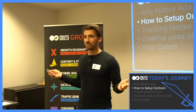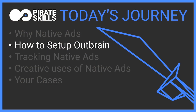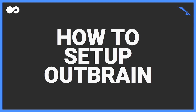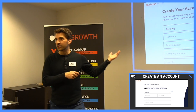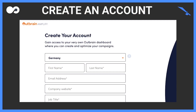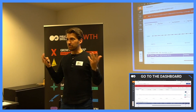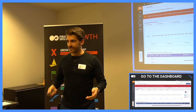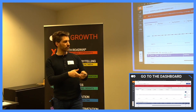We need to track the performance of our ads, but first we have to set it up. So how do you set up Outbrain? You go to outbrain.com, create your account with just minimal fields, then you go to the dashboard and you can already see your campaigns.